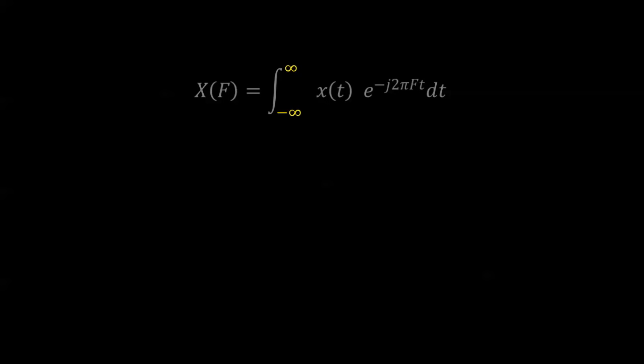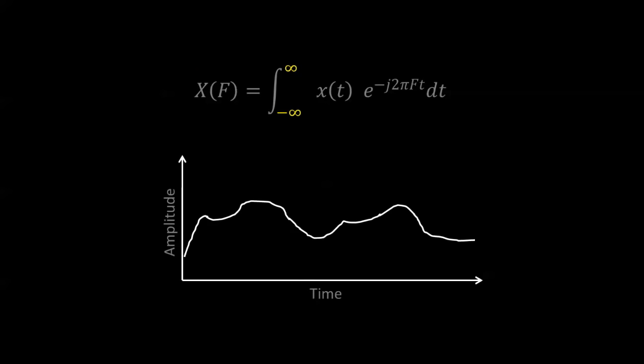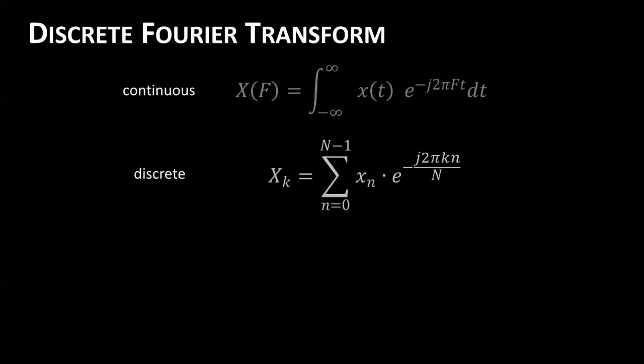Something else that may be disconcerting is having to run the integral from negative infinity to infinity. Luckily, you never have to do this in practice because you're always collecting data within a finite time frame. An analog-to-digital converter also cannot sample continuously, so what you end up with is a set of discrete points running from time equals zero to the Nth sample. To conduct the Fourier transform on discrete samples, we use the discrete Fourier transform.